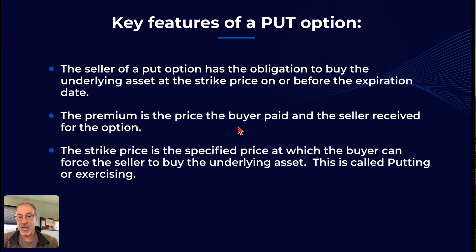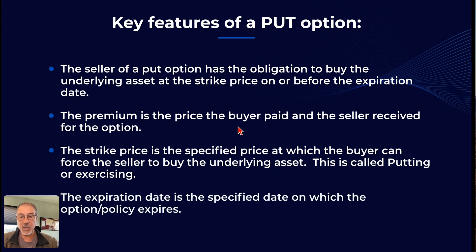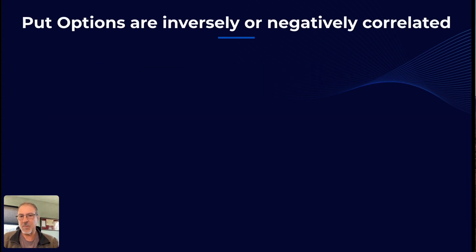The strike price is the specified price at which the buyer can force the seller to buy the underlying asset. The act of forcing them to buy it is called putting, or exercising the option. The expiration date is the specified date on which the option — or in the case of insurance, the policy — expires. Hopefully that simplifies the whole put concept in relationship to home insurance.